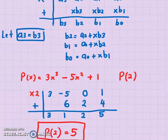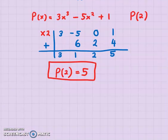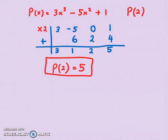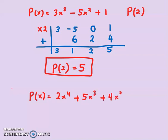So Horner's scheme is easier if you have a very long polynomial and you prefer to do it very quickly. For example, let me show you another example with a degree 4 polynomial.